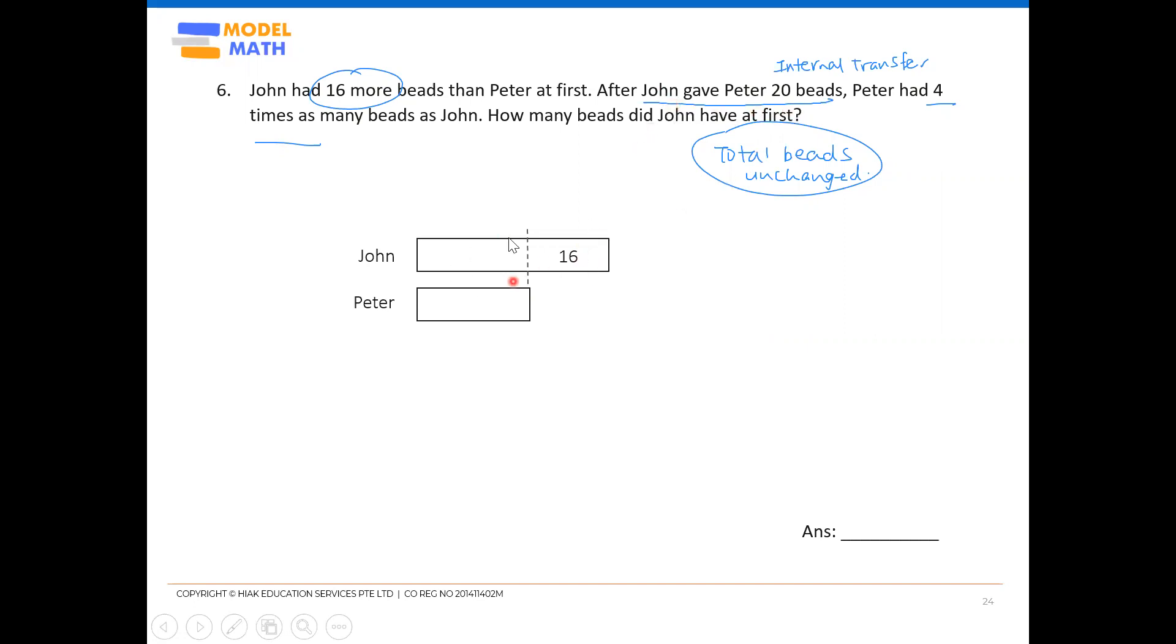So John gave Peter 20 beads. So we're going to take out 20 beads. Take away 20 beads from John, which means we need to shake off 20. Now to shake off 20, of course, you have to include the 16 unit as well. It's to be part of the 20. So your 20 should be somewhere like that. This is your 20. Put down a dotted line and you can shake it off. Remember to do your shading.